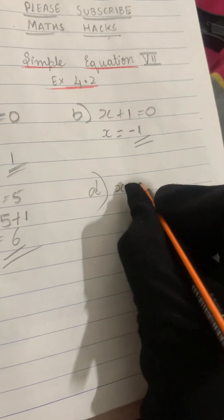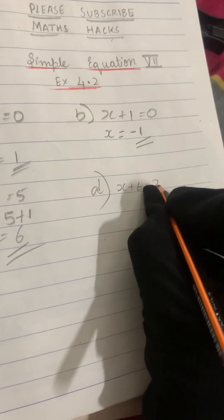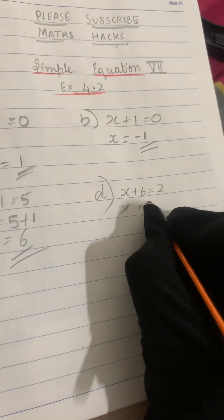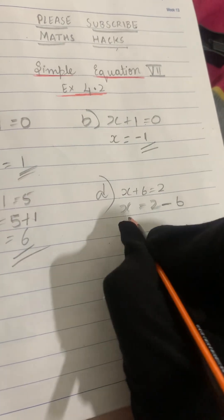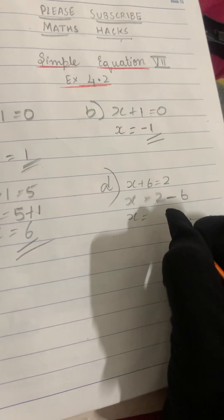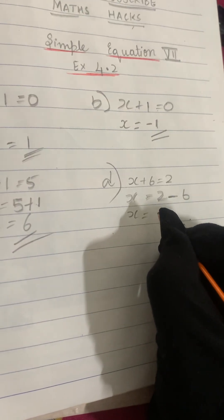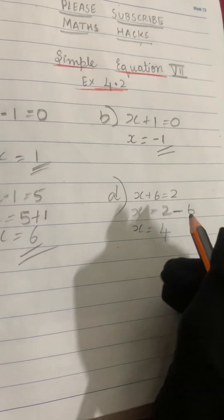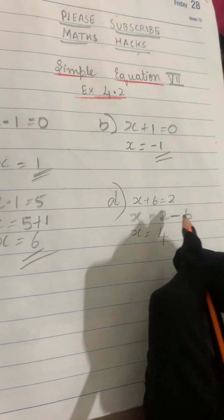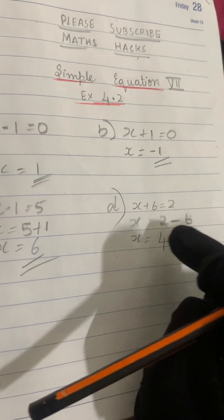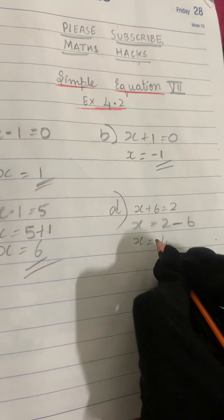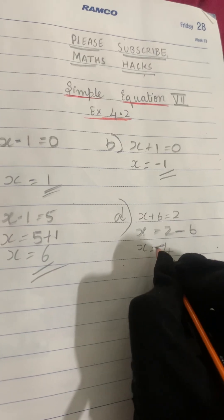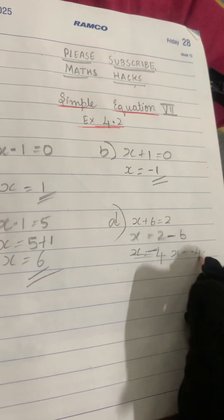Now let's solve the D question: x plus 6 equals 2. Simple — x equals... let's take 2 here and shift plus 6 over here; it becomes minus 6. So x equals 2 minus 6. Now, 2 minus 6 — which is the greater number? 6 is greater, and the sign of 6 is minus. So we always take the sign of the greater number. Therefore x equals minus 4 is our answer.